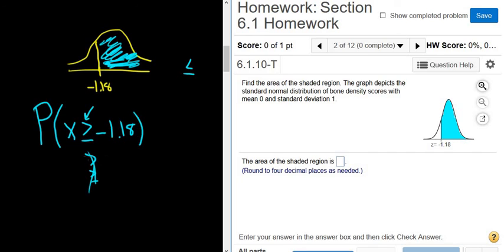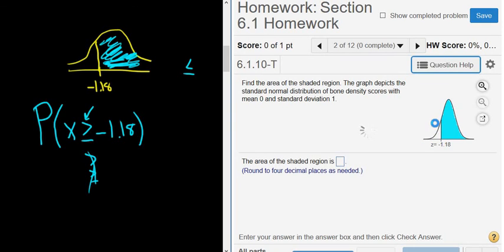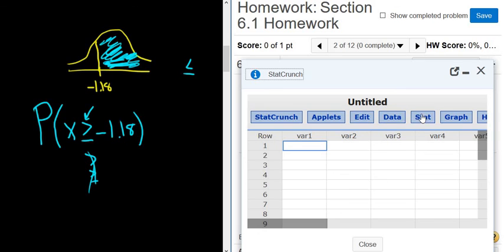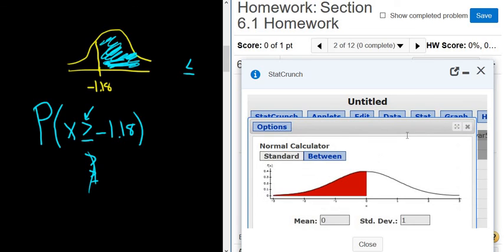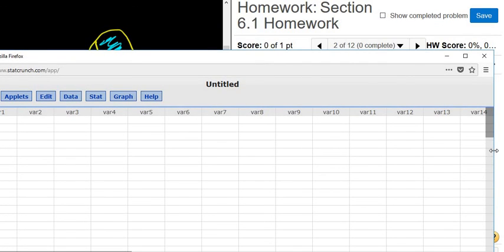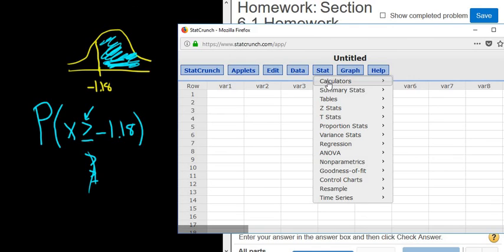So what you do now is you go to StatCrunch. So you click on where it says Question Help, and then StatCrunch. Then you go to Stat, Calculators, and then you go to Normal. Let me detach this to make it a little bit easier to see. And I'll do that again. So it's Stat, Calculators, Normal.